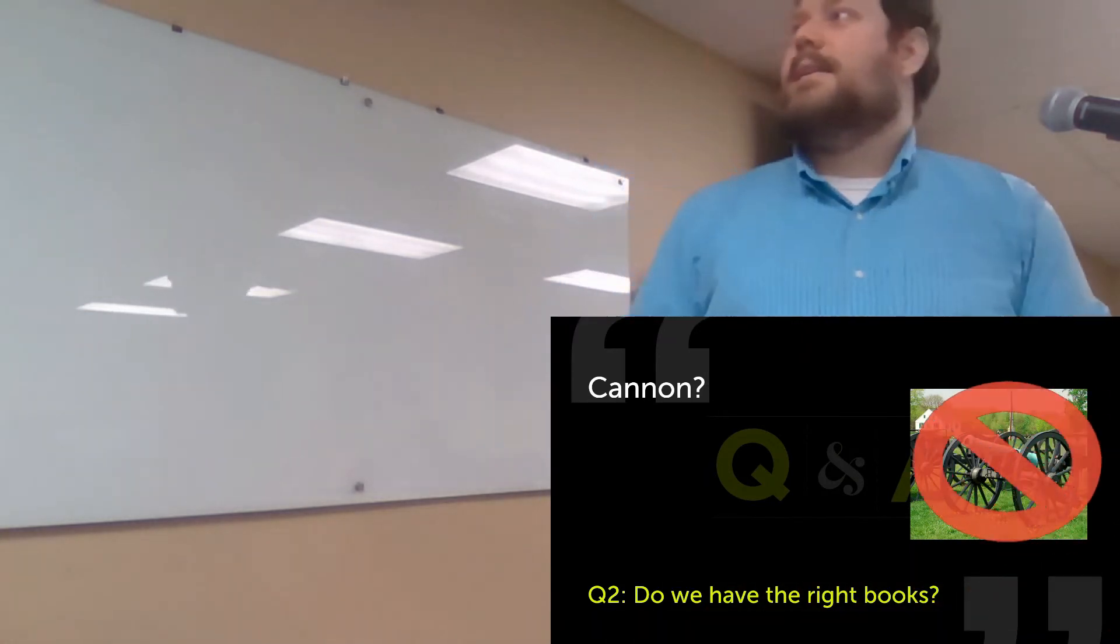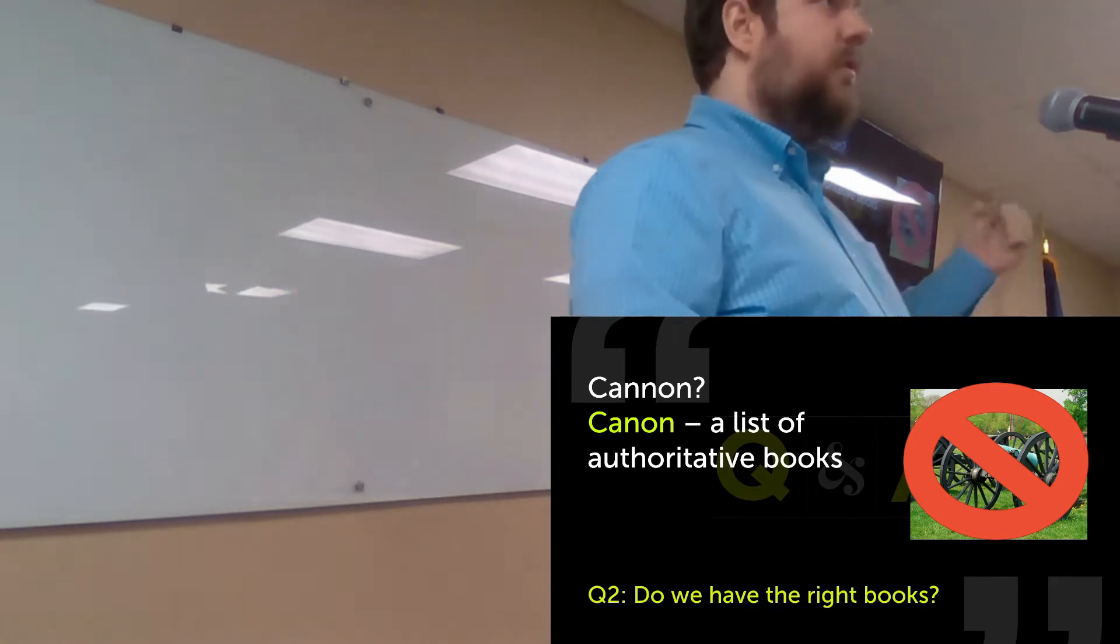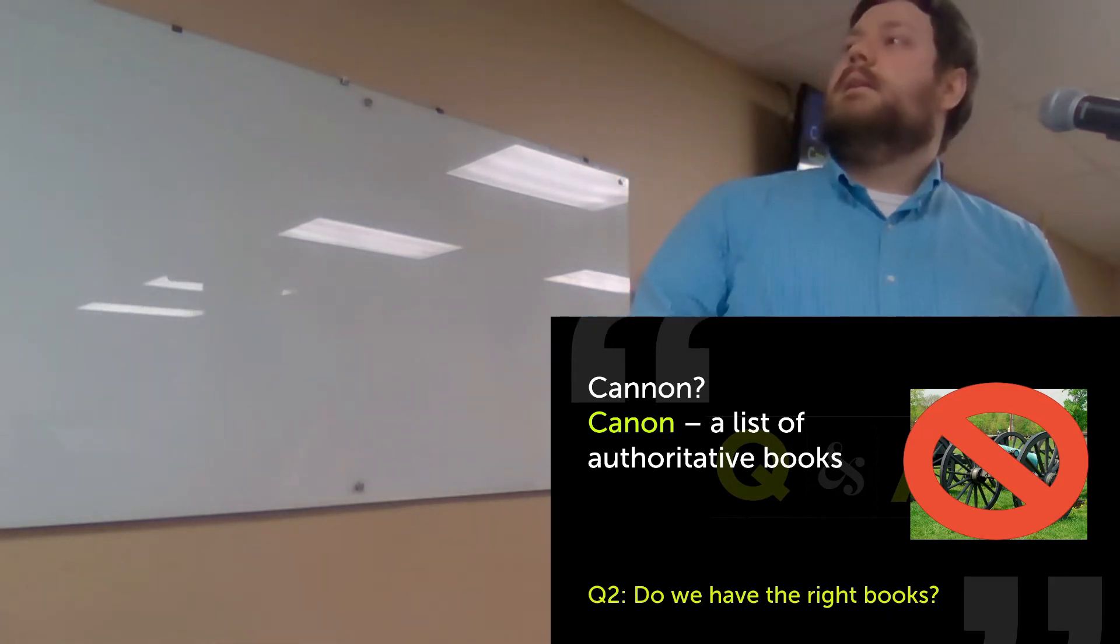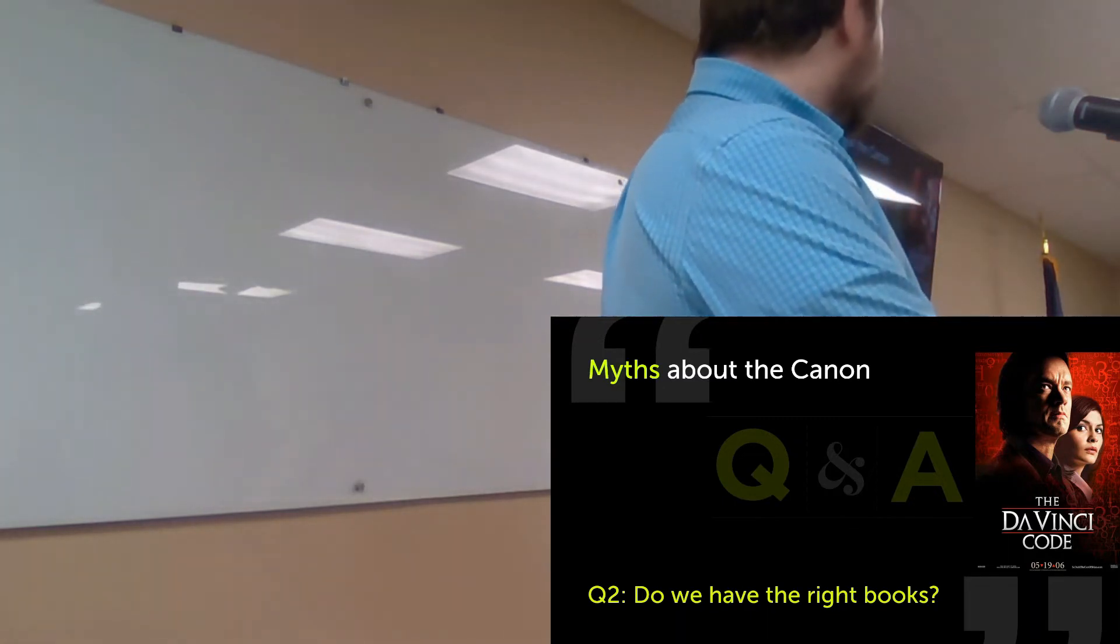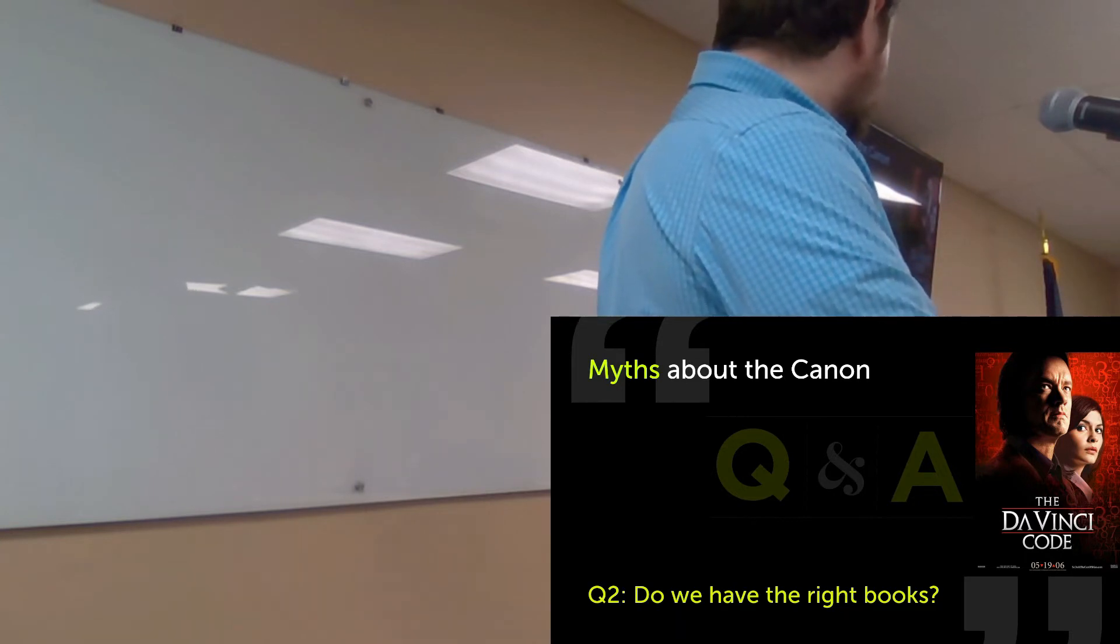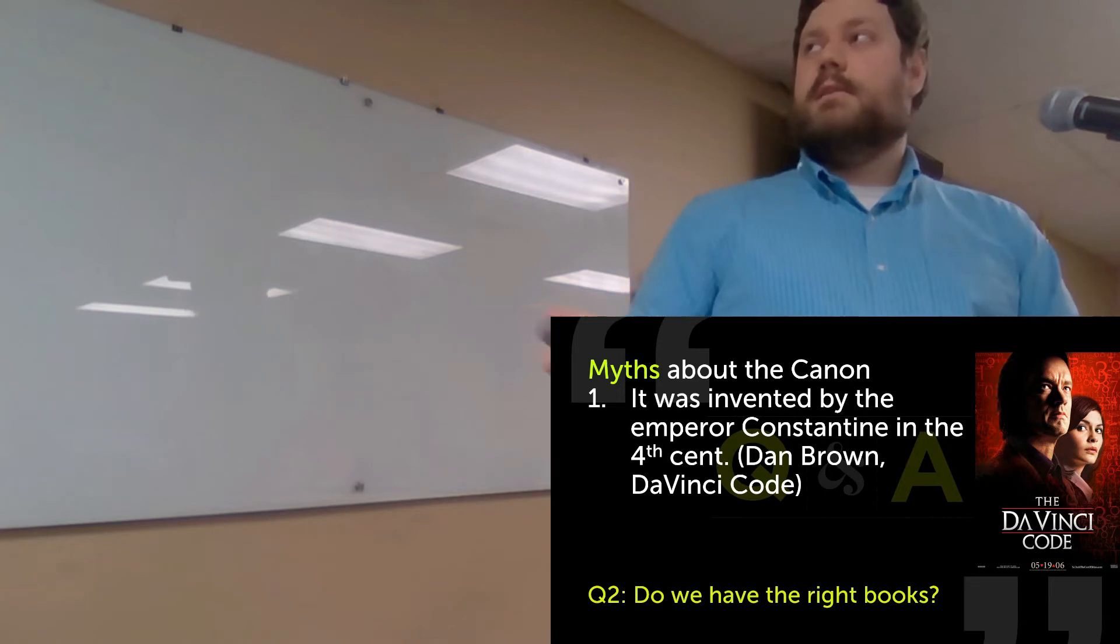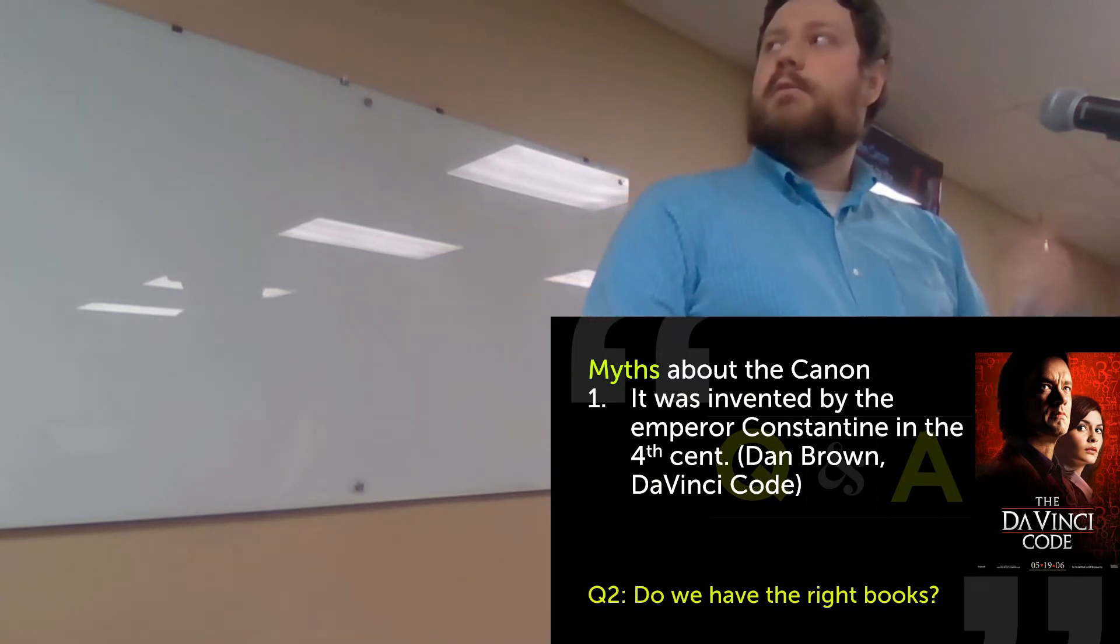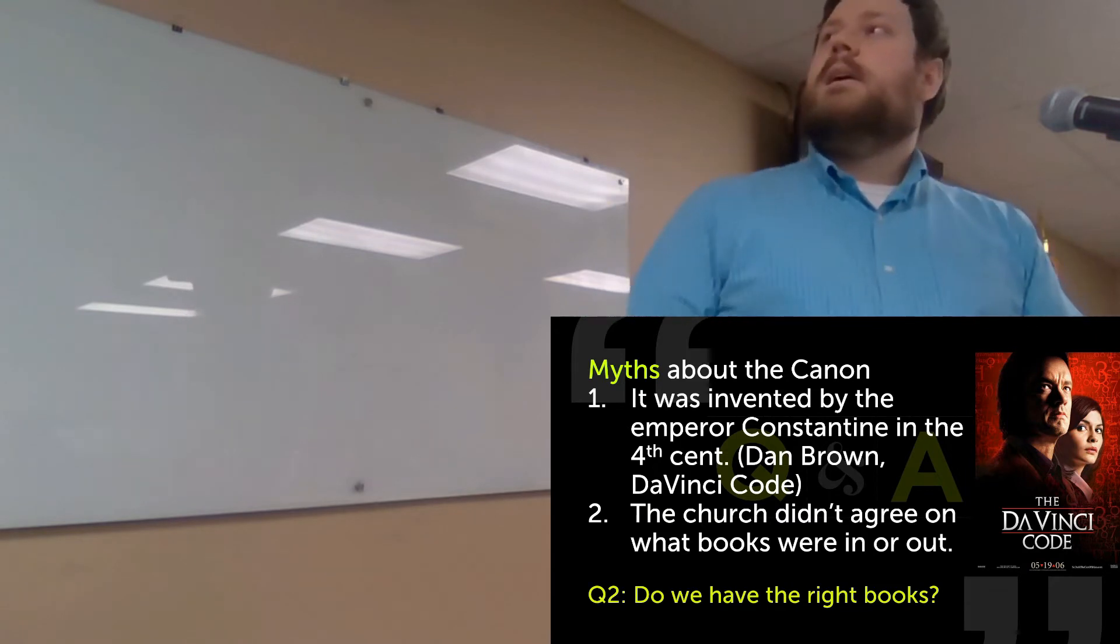The canon. And not that kind of cannon. The canon with one N in the middle. It's a word that refers to a list of authoritative books. It originally comes from the word for like a reed or a ruler, a stick. It's the kind of measuring line that tells us what things are in and out of the canon. There's some myths out there about the canon. A lot of these came from the Da Vinci Code, which was a book by Dan Brown and then a movie in 2006. He claimed something like it was invented by the Emperor Constantine in the 4th century. Before that, there were all these books going around and they just picked the ones that they liked. That's not true at all.